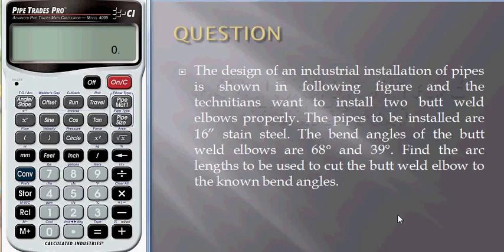Let's read the information we need to know in order to get the solution from the calculator. The design of an industrial installation of pipes is shown in the following figure, and the technicians want to install two butt weld elbows properly. The pipes to be installed are 16 inch stainless steel.